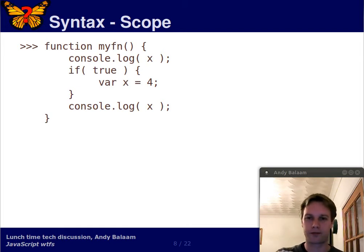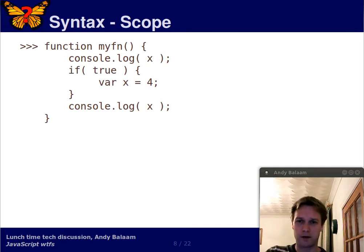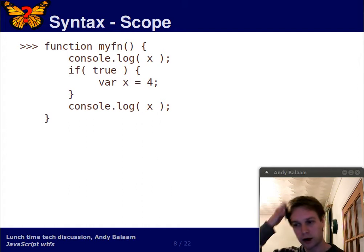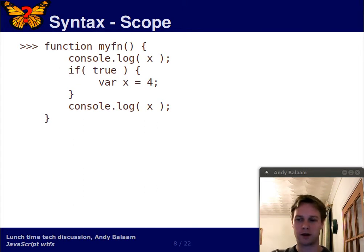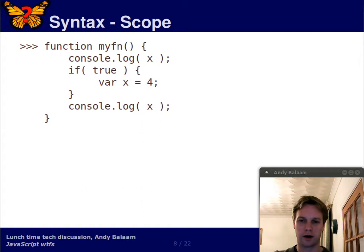So today we're talking about syntax, which is my way of covering various topics which might be somewhat unrelated. Imagine we have a function called myfun. What it does is it writes the value of x to the console — that console.log line. And then there's an if statement which is always executed because the condition it's checking is just true. Inside there, we declare a variable called x and set it to 4. The last line of the function writes the value of x to the console.